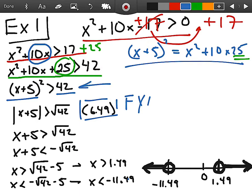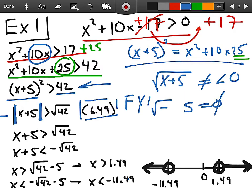Because x plus 5, when I take the square root of it, it cannot be less than 0. That means you would have a negative under the square root, and that is a null set that does not exist.